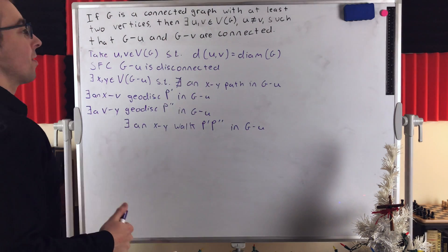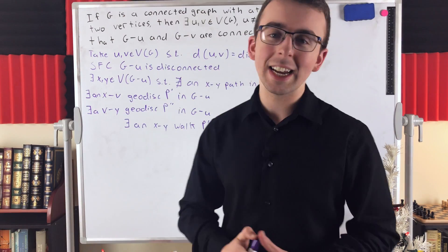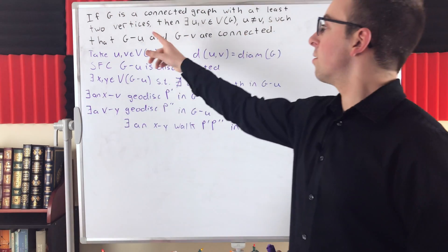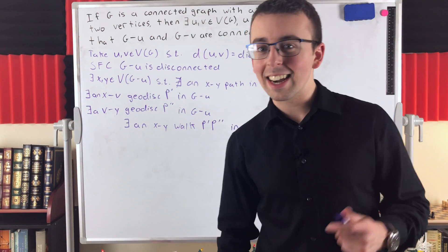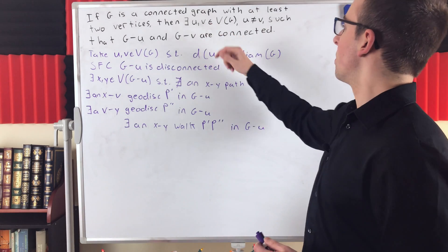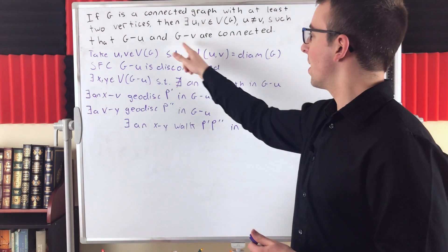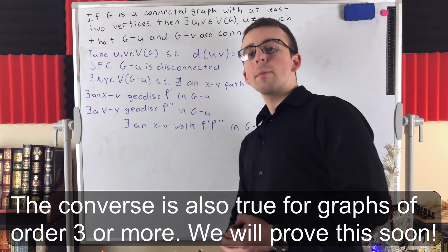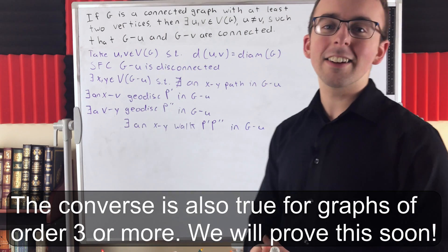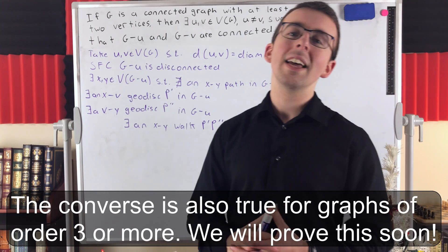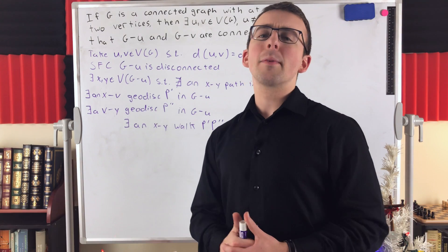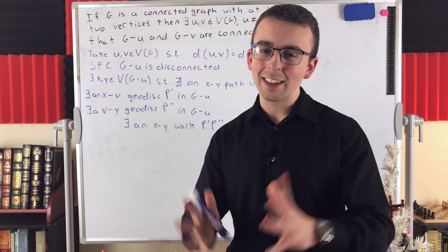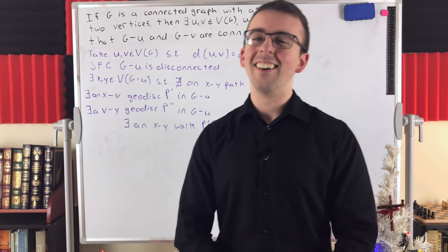So that's the result. I hope this video helped you understand how to prove that if G is a connected graph with at least two vertices, then it contains two distinct vertices U and V such that G minus U and G minus V are both connected. Let me know in the comments if you have any questions, need anything clarified, or have any other video requests. Thank you very much for watching — I'll see you next time, and be sure to subscribe for the swankiest math lessons on the internet.